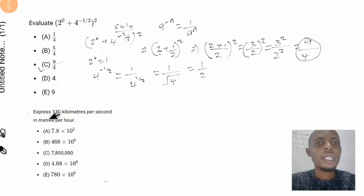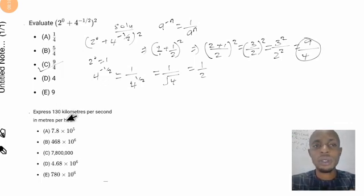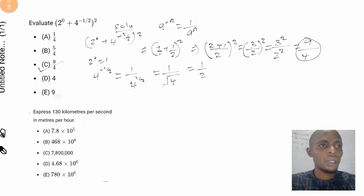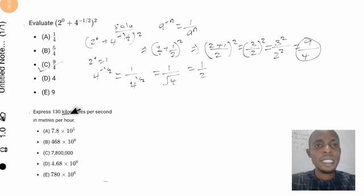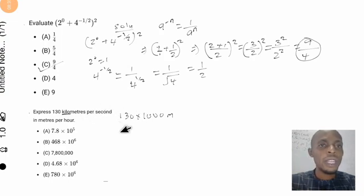Let's solve question two. The question asks you to express 130 kilometers per second in meters per second. This is very simple. The key thing to note here is that kilo means one thousand. So to convert to meters, it will be equal to 130 multiplied by 1000 meters.